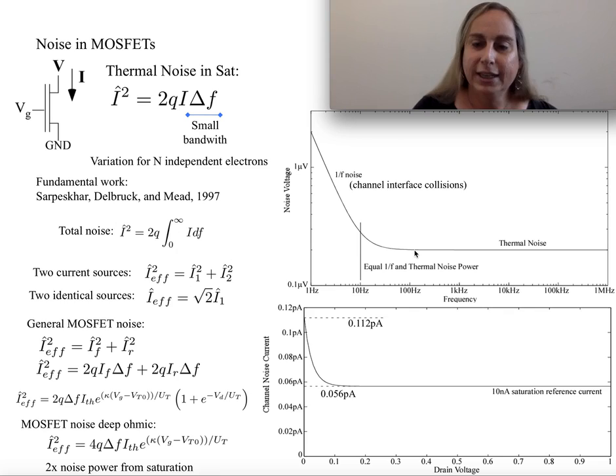Typically we'll see thermal noise which is constant. You'll also see 1/f noise, which has to do with channel interface collisions. It's primarily characterized by one parameter based on your process.